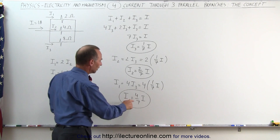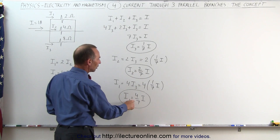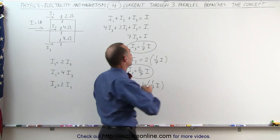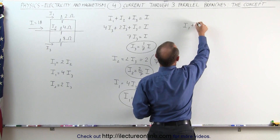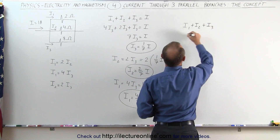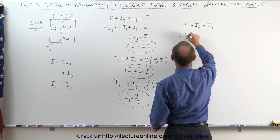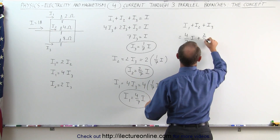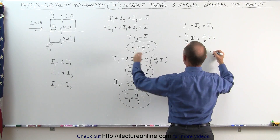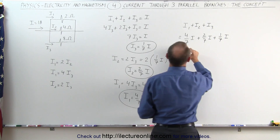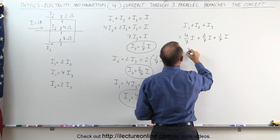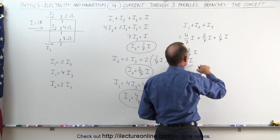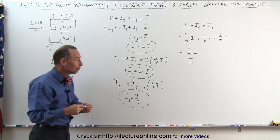You can see that I1 is twice I2, and I1 is four times I3. Now when I add those three currents together: I1 plus I2 plus I3 equals four-sevenths I, plus two-sevenths I, plus one-seventh I. Adding them: four plus two plus one equals seven-sevenths I, which equals the total current I. So adding the three branch currents does indeed equal the total current entering the branch point.